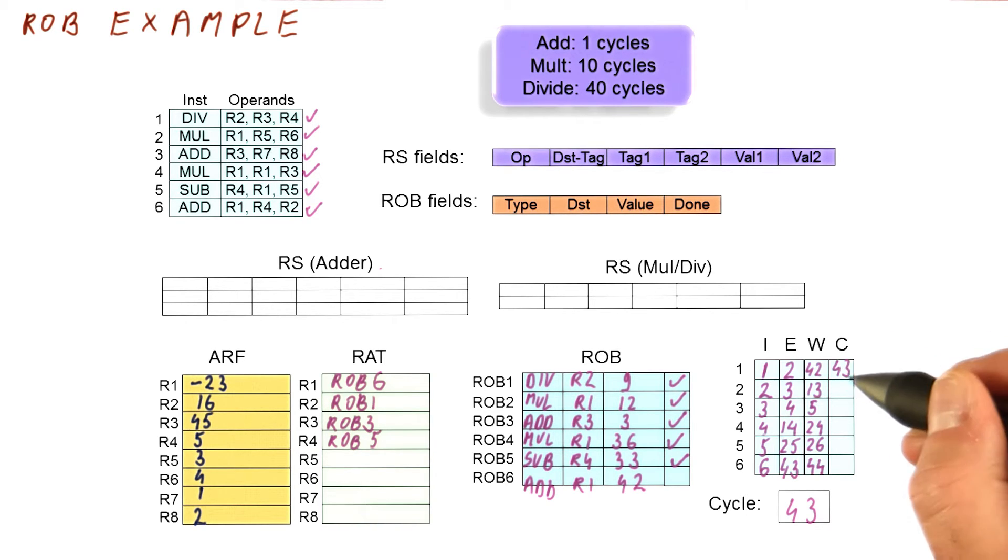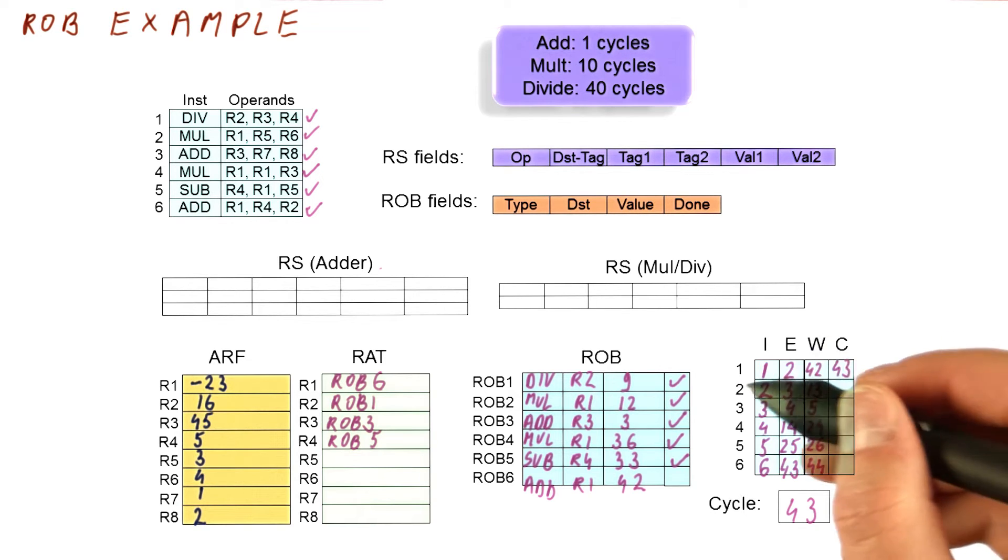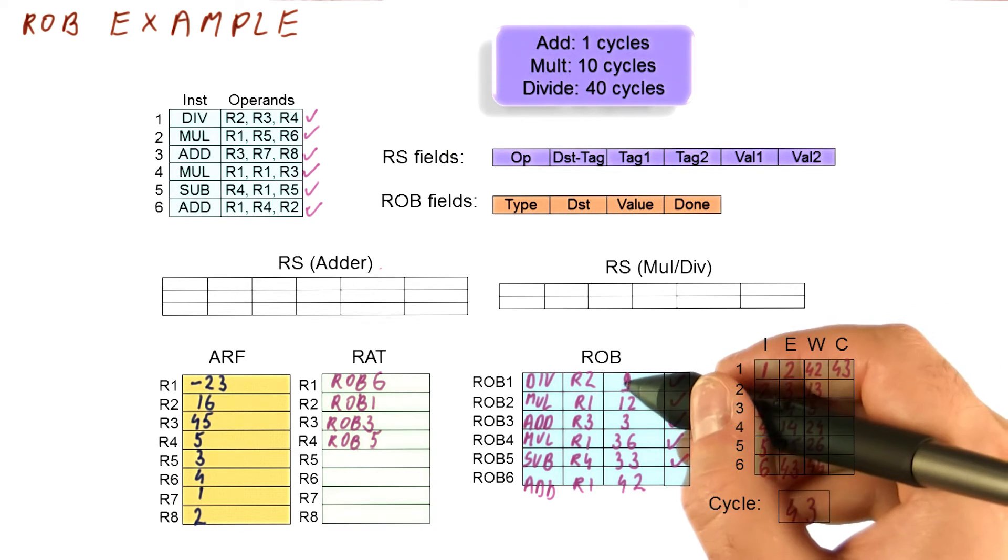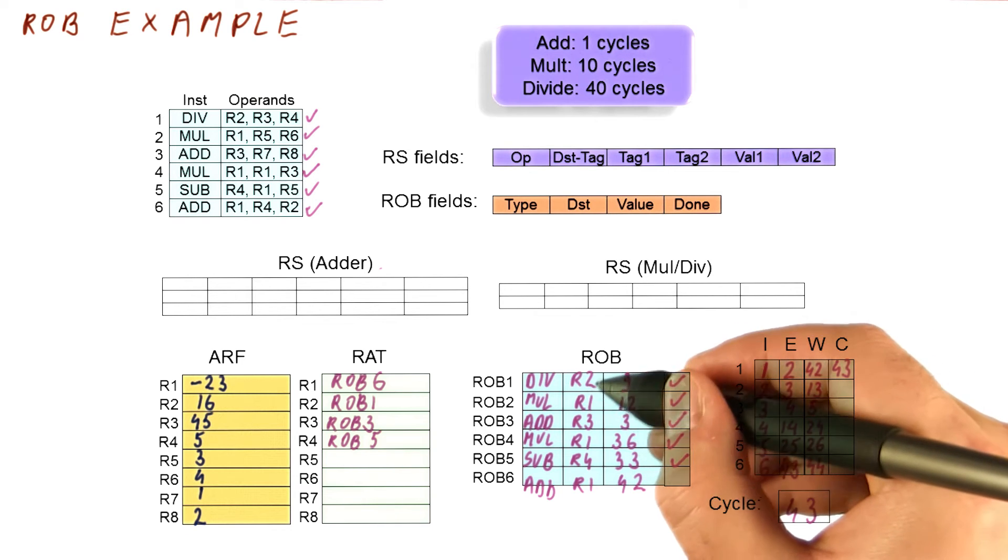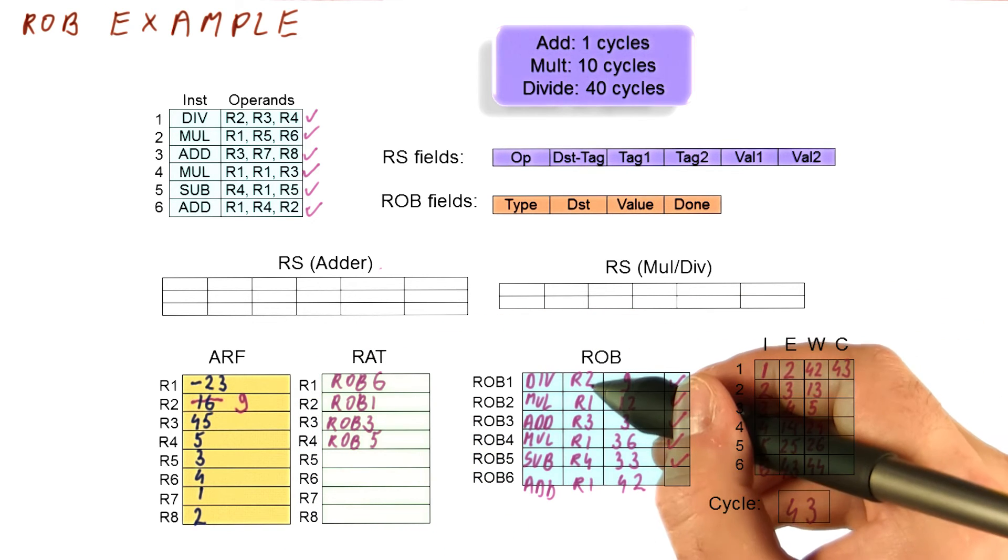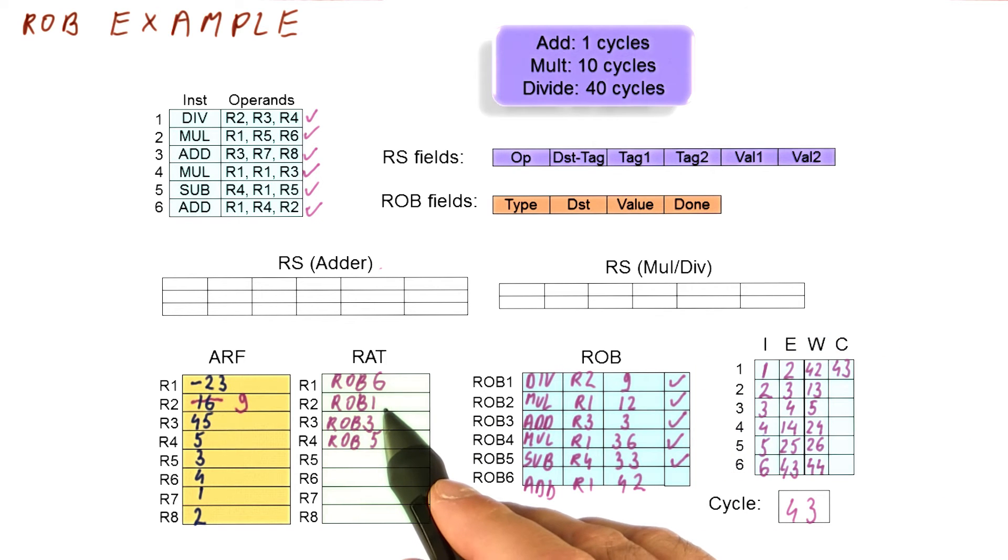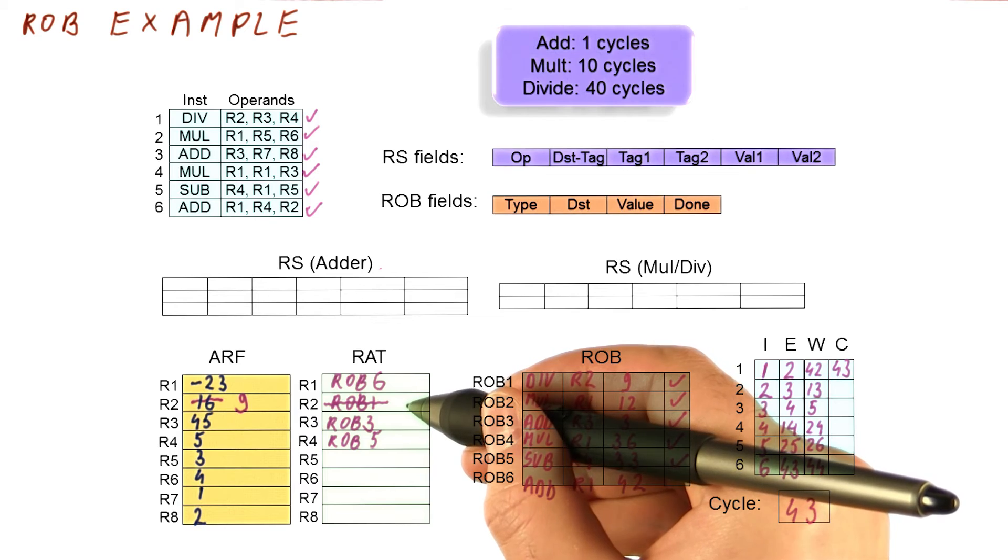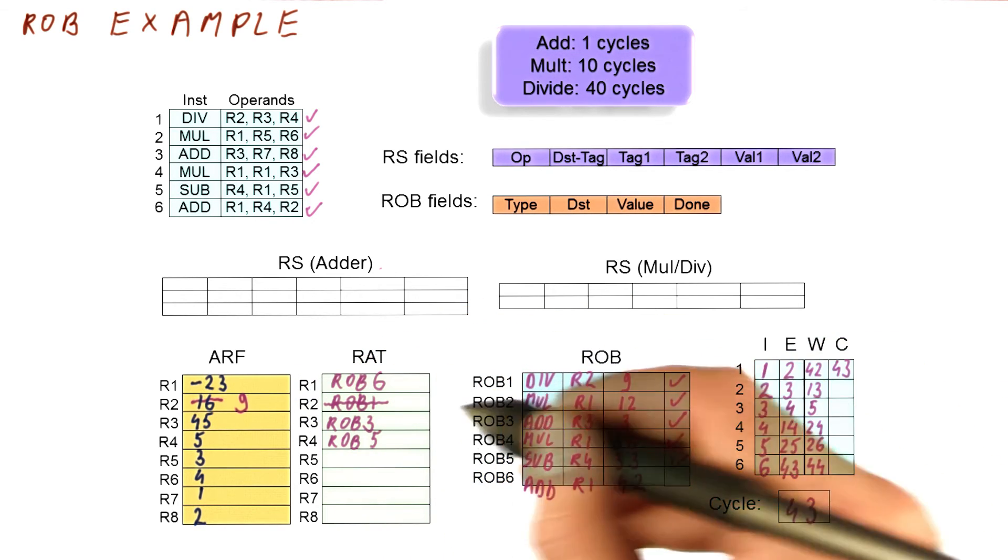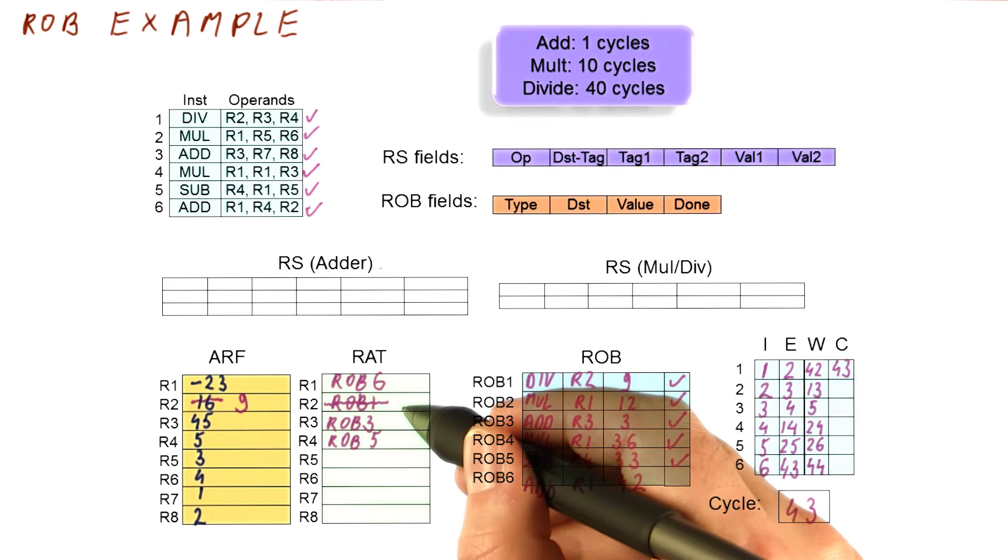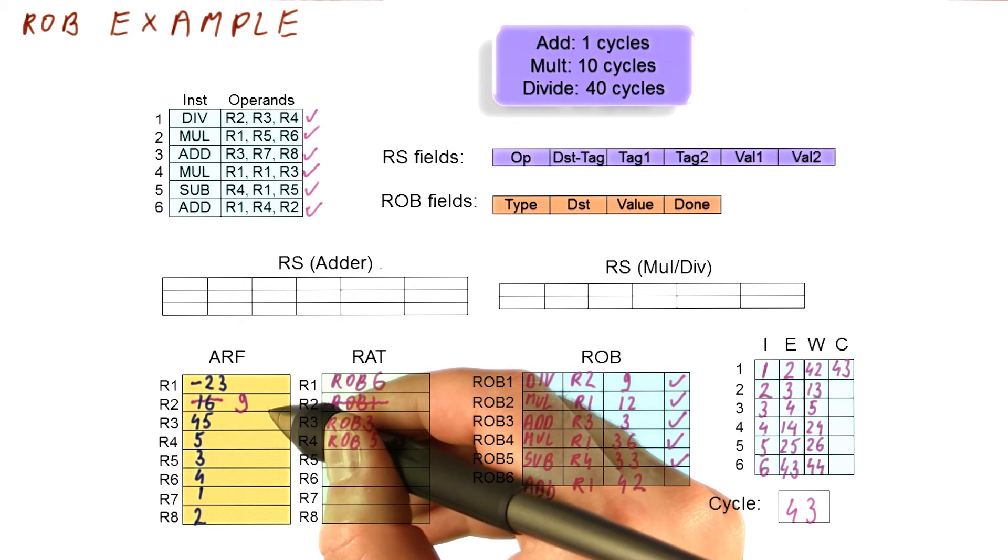Now that this instruction commits in 43, what's going to happen is several things. First, the ROB entry for this instruction will be freed. But before we free the ROB entry, we need to update the register file. So we take this 9 and we're going to write it to register R2. So register R2 is now going to be written as 9. Next, we're going to look at the RAT entry for R2 and see whether it's pointing to our ROB entry. Yes, it is. So from now on, ROB1 will be free after this cycle. What we have to do is make this R2 entry point back to the register file.